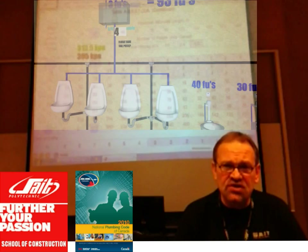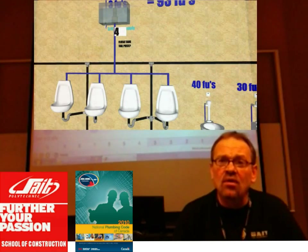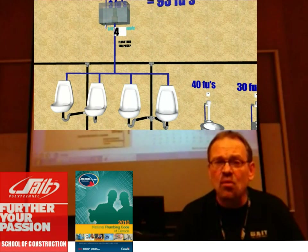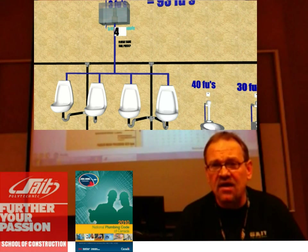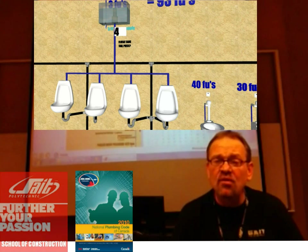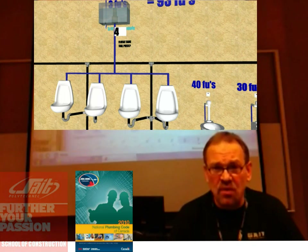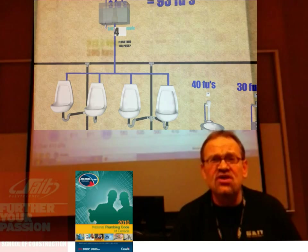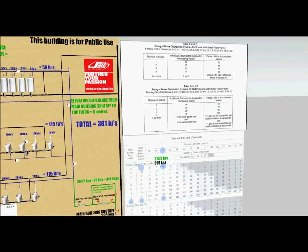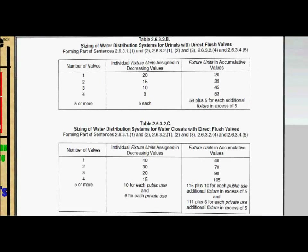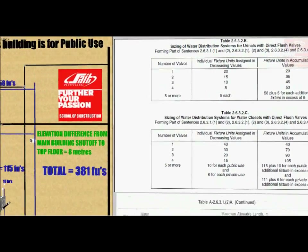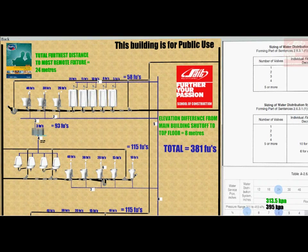Finally, in this animation we will size three different areas by a urinal flush tank: the distribution pipe to the tank, the water supply pipe to the tank from the R19, and also the water tailpiece coming from the flush tank to a battery of urinals. The following animation will utilize a three-story building for public use. Open up your code books to tables 263B and C as we will now explain the use of these flushometer tables.